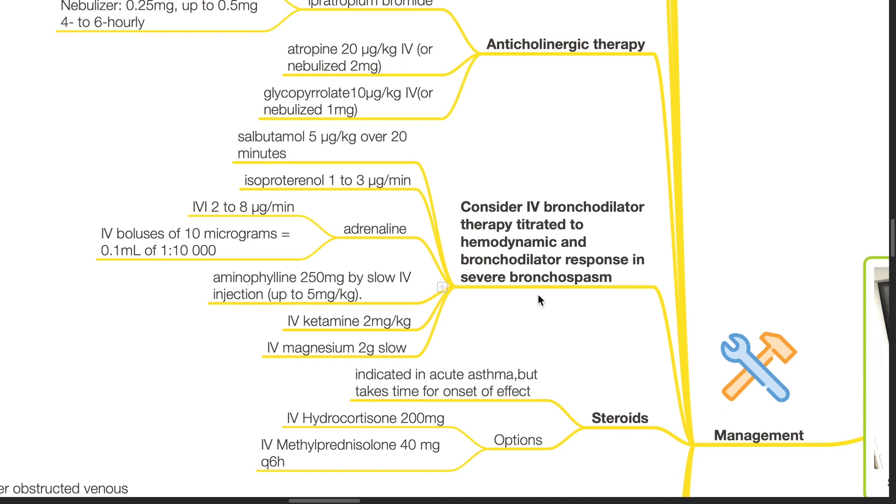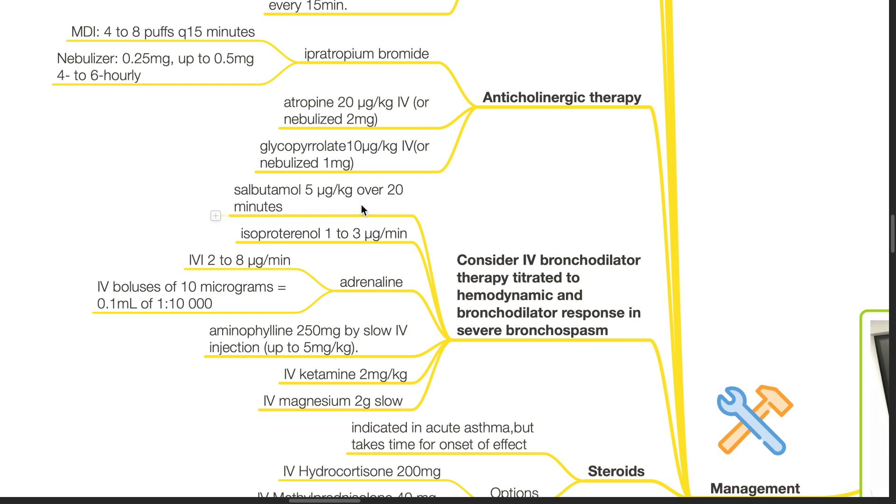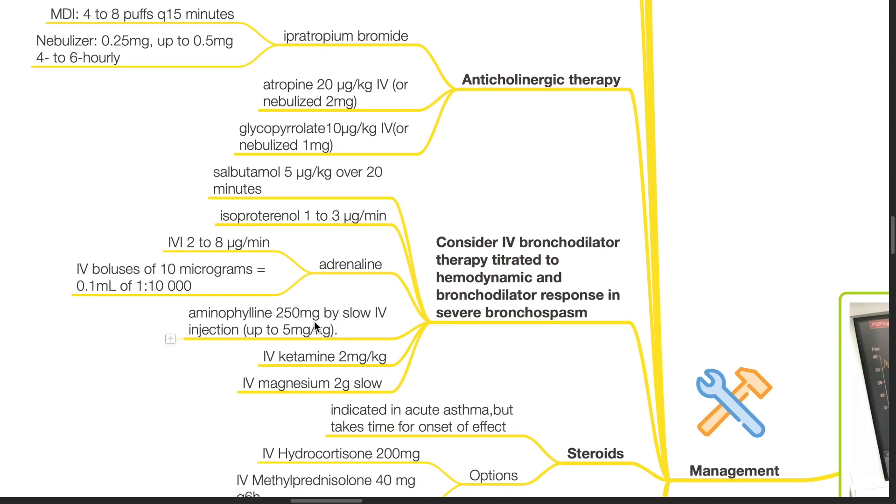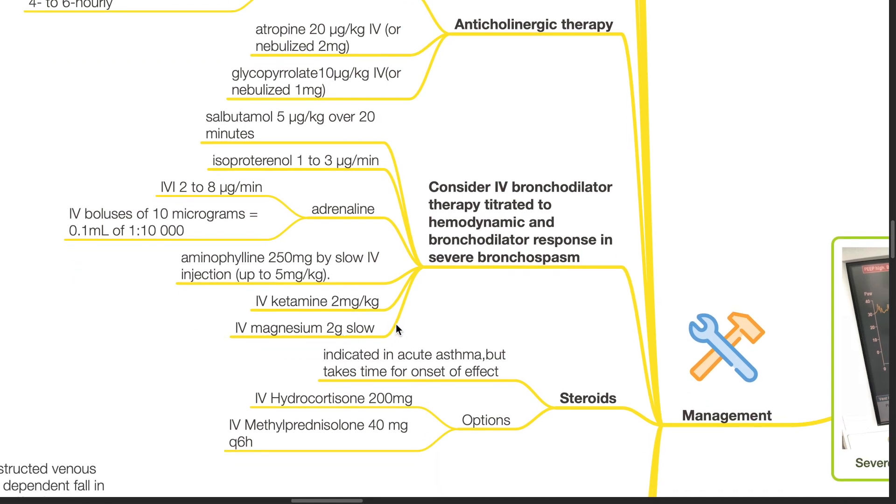Consider IV bronchodilator therapy titrated to hemodynamic and bronchodilator response in severe bronchospasm. Salbutamol IV 5mcg per kg over 20 minutes, isoproterenol 1 to 3mcg per minute, adrenaline IVI 2 to 8mcg per minute or IV boluses of 10mcg, aminophylline IV 250mg by slow injection up to 5mg per kg, IV ketamine 2mg per kg and IV magnesium 2g slow bolus are options to consider.